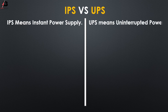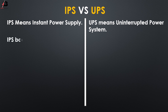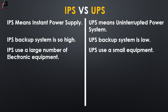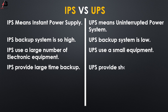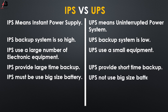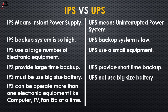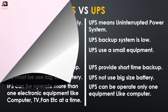Differences between IPS and UPS: IPS means instant power supply; UPS means uninterruptible power system. IPS backup capacity is high; UPS backup capacity is low. IPS is used with a large number of electronic equipment; UPS is used with small equipment. IPS provides large-time backup; UPS provides short-time backup. IPS must use a big size battery; UPS does not use a big size battery. IPS can operate more than one electronic device like computer, TV, fan, etc. at a time; UPS can operate only one equipment like a computer.